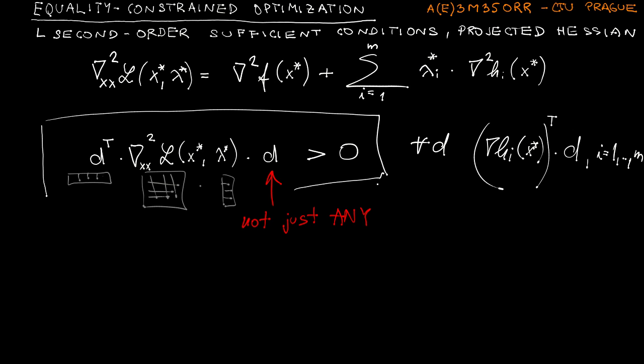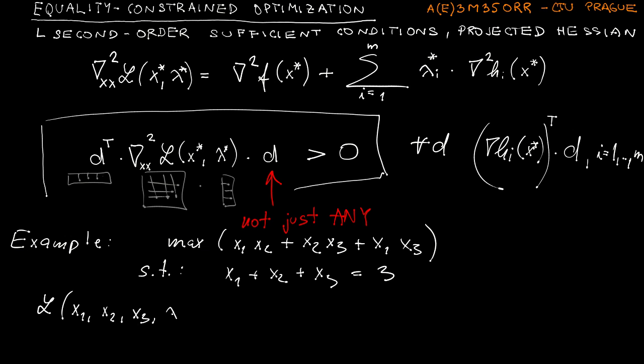Let's now have a look at an example which will illustrate this nicely, I believe. So we would like to maximize the following function: x1 x2 plus x2 x3 plus x1 x3, subject to the following constraint: x1 plus x2 plus x3 is equal to 3.